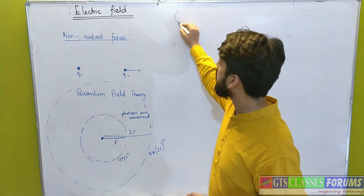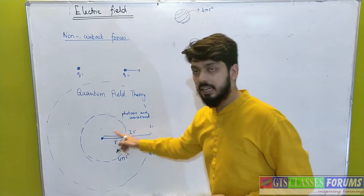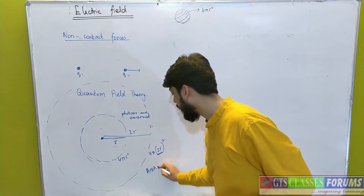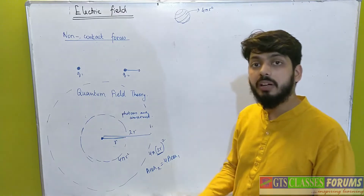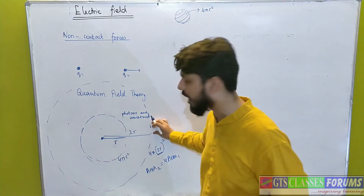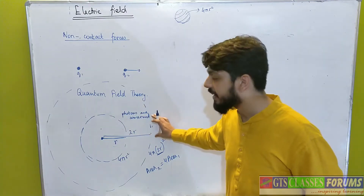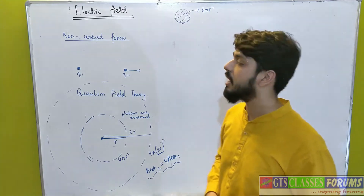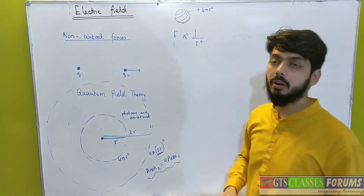Now we are going to understand what is happening here. The surface area of a sphere is 4πr². So here if the radius doubles — distance doubles — then area is 4 times. Area₂ equals 4 times Area₁. Now if area is 4 times, the photon density — number of photons per unit area — becomes one-fourth. This is the reason why gravitational force and electrostatic force follow the inverse square law. Force is inversely proportional to r² because of this. That is one of the explanations of quantum field theory.